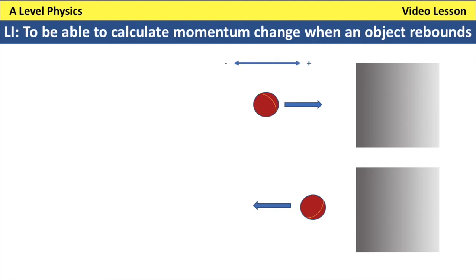To help with the analysis, I need to determine which direction is positive and which is negative. Knowing that we read from left to right, going towards the right is positive and going towards the left is negative. The initial speed of the cricket ball is plus u, and the velocity afterwards is minus v. To simplify the argument, I'll assume there is no change in speed during the collision.